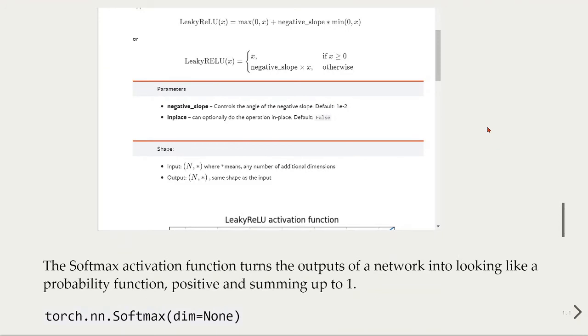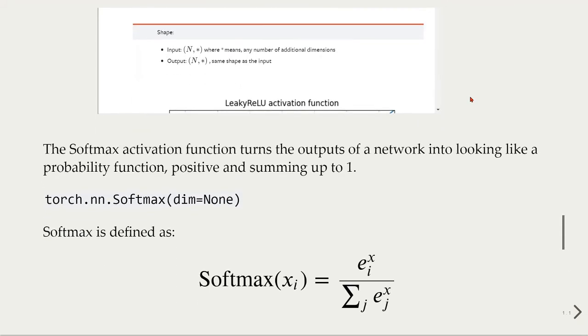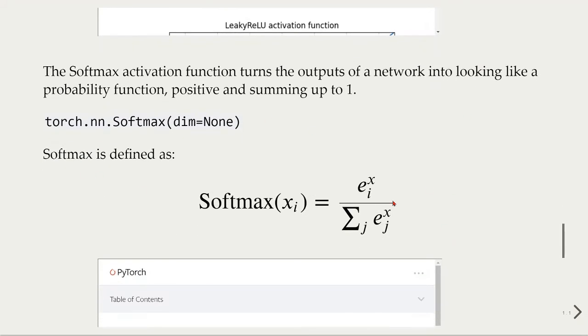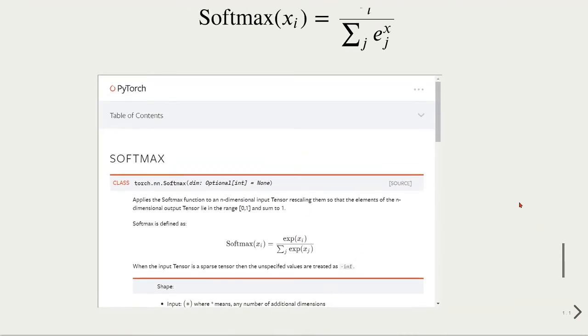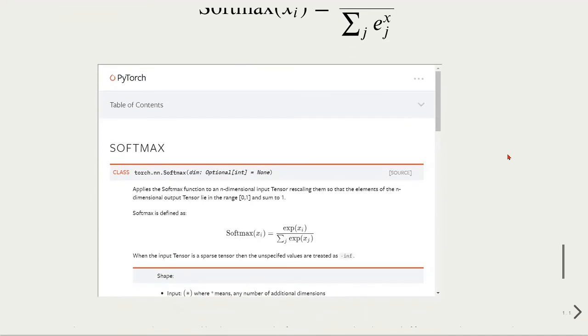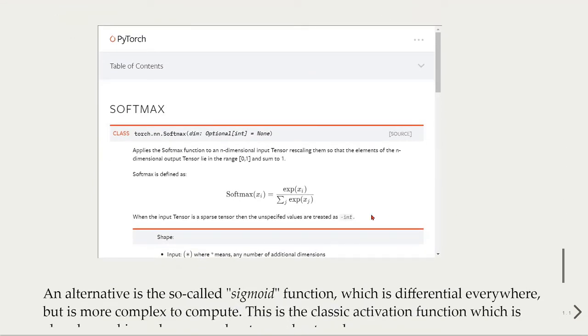Another activation function is the softmax. The softmax activation function turns the outputs of a network into looking like a probability function, positive and summing up to 1. This is another very used activation function. We find in the documentation, which is given by this equation here, this is the softmax. This applies the softmax function to an n-dimensional input tensor, rescaling them so that the elements of the n-dimensional output tensor will lie in the range of 0 to 1 and will sum to 1.